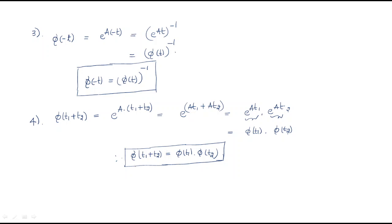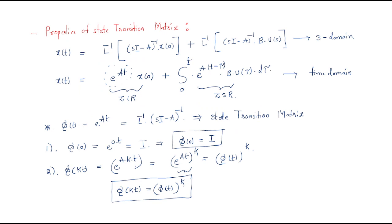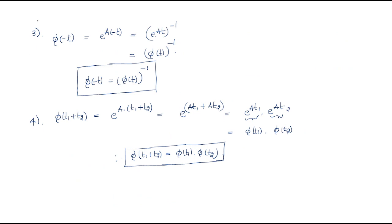Summarizing the properties of the state transition matrix: first, at time equals 0, the state transition matrix becomes I, the identity matrix. Second, if the time period is multiplied by k, then phi(kt) equals phi(t) whole power k. Third, phi(minus t) equals phi(t) whole inverse. Fourth, if two time periods are added, phi(t1 plus t2) equals phi(t1) times phi(t2).